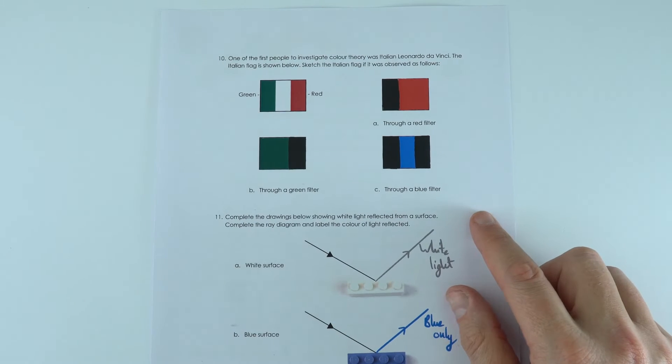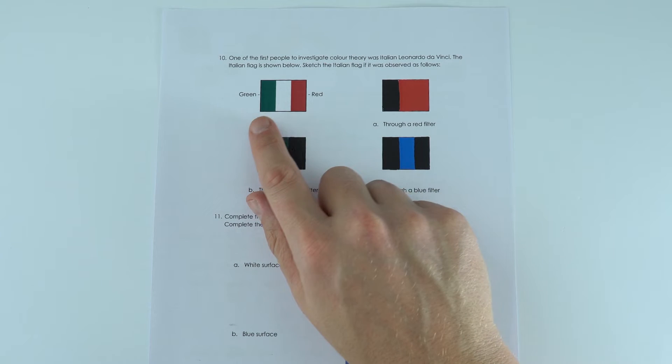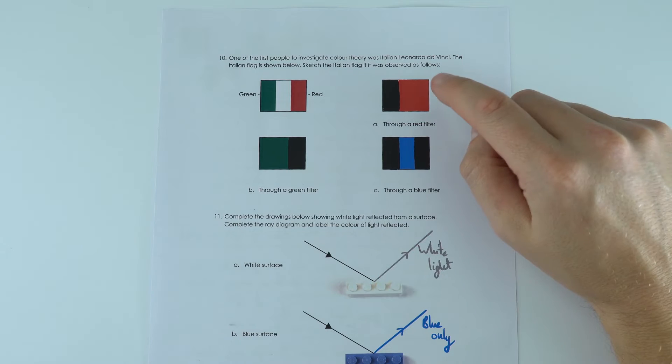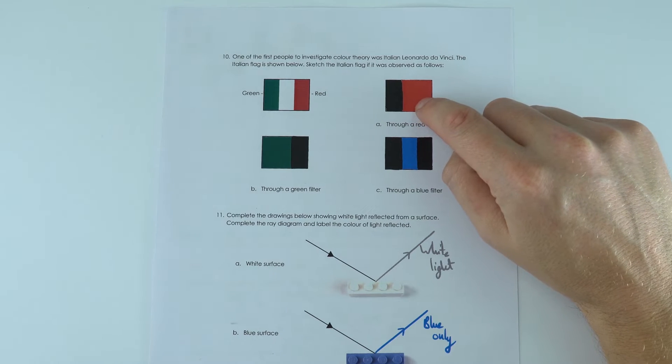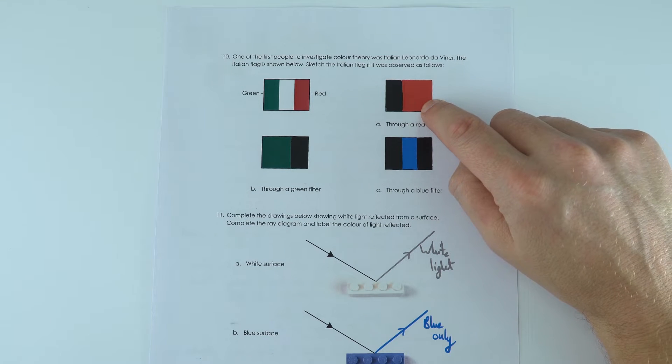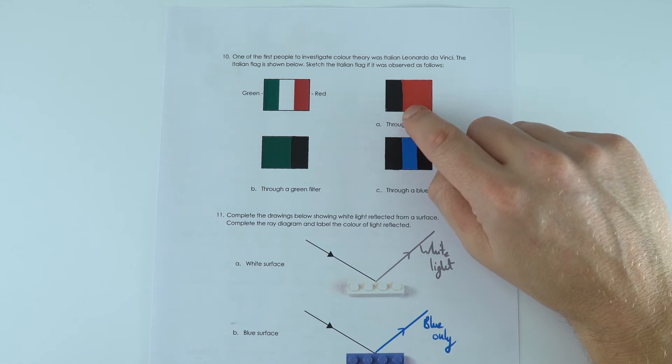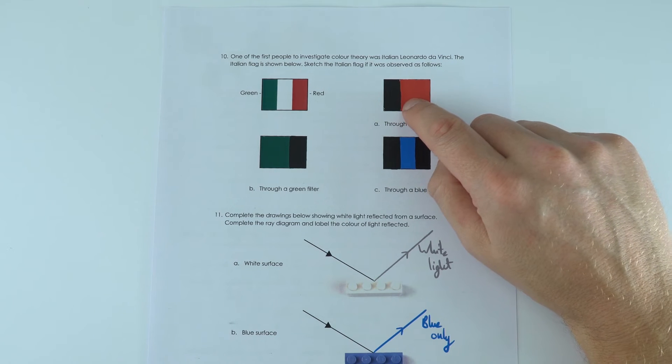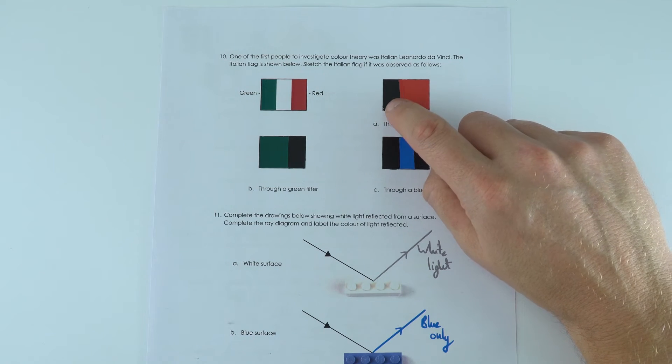We then had an Italian flag, so green, white and red. When you look through a red filter then what happens is it lets the red light through, it lets the red light in the white light through so that appears red, but the green light is absorbed so it appears black.